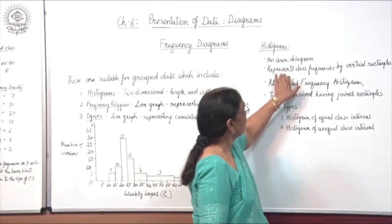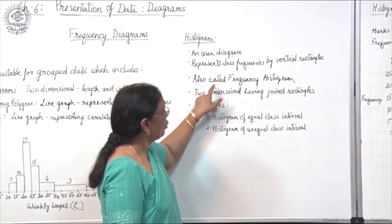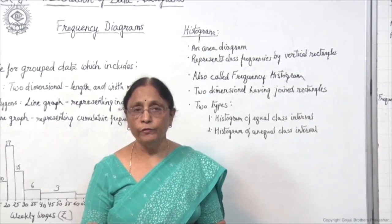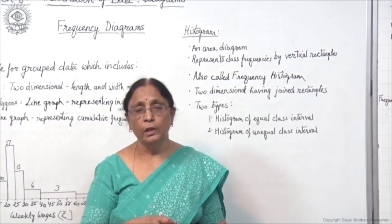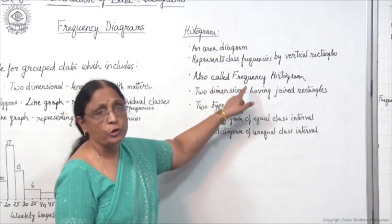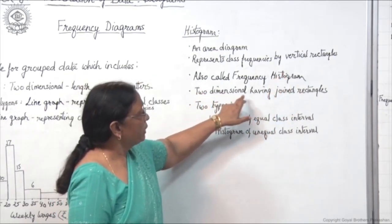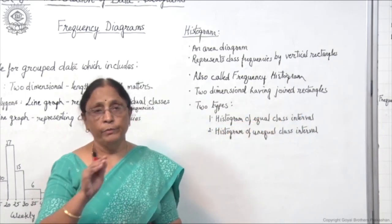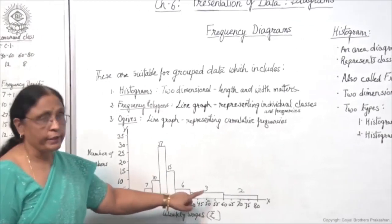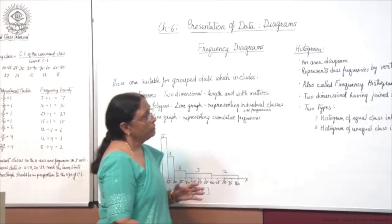So histograms represent class frequencies by vertical rectangles. Third, histograms are also called frequency histograms because they are drawn with grouped data where the class interval is given along with frequencies. Another feature is that these are 2-dimensional having joined rectangles — 2-dimensional because they consider the area, that is both length and breadth, and are drawn with joined rectangles having no space in between. All the rectangles are joined and they show the frequencies.